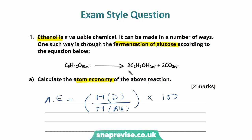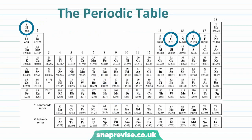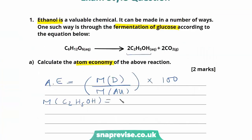Our desired product is ethanol, C₂H₅OH. From the periodic table, hydrogen has a molar mass of 1, carbon 12, and oxygen 16. So that's 12 times 2, plus 1 times 6 (since we have 6 hydrogens), plus 1 oxygen, which is 16, giving a total molar mass of 46.